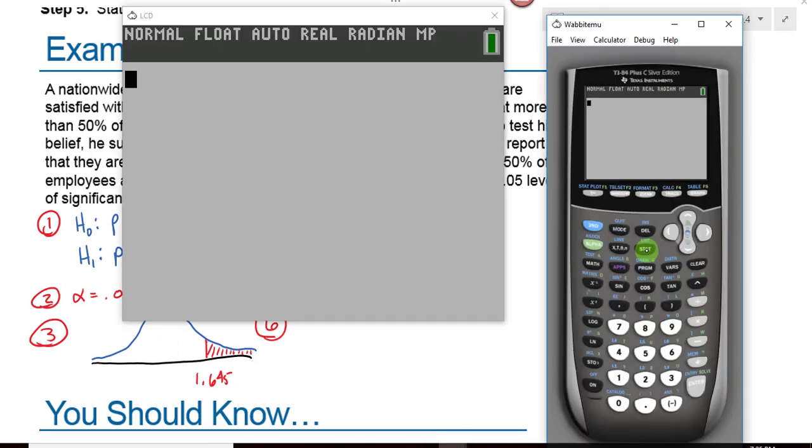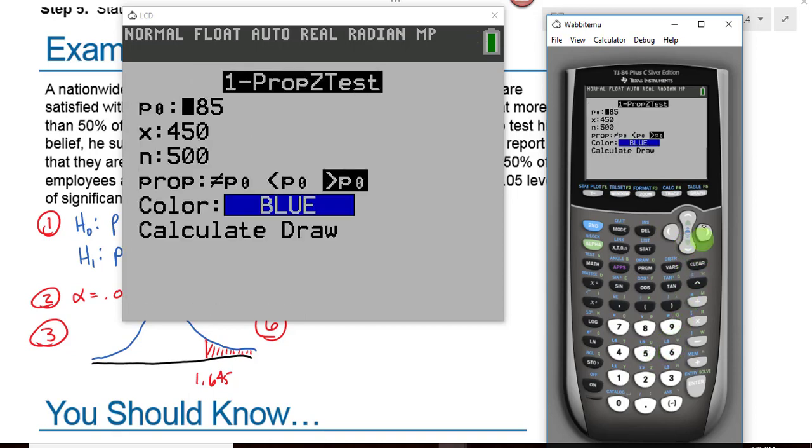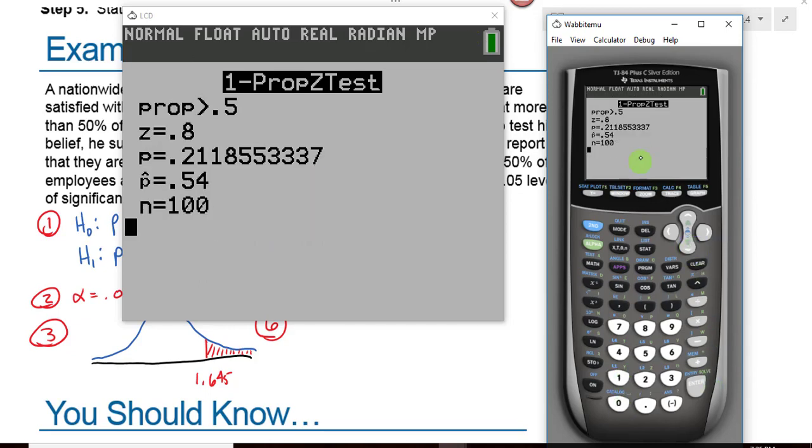Let's go to the calculator. We hit stat, tests, number five is the one proportion Z test. We have summary statistics. Our null hypothesis value is 0.5. X was 54. N was 100. This is still greater than. And there's our results.